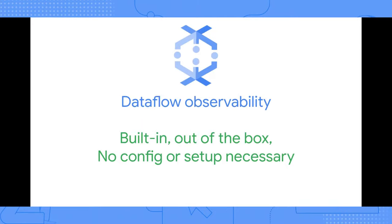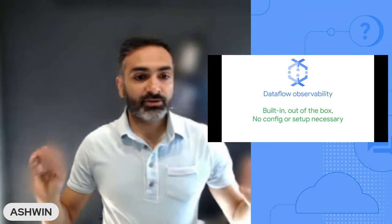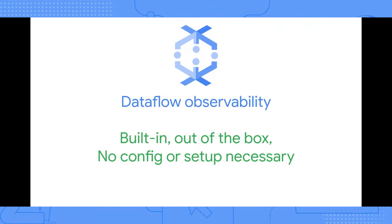Dataflow's observability is built in, out of the box — no configuration or setup is necessary. You focus on building and writing your pipelines. After you deploy the pipeline, all observability capabilities are right there in front of you. You do not have to deploy a monitoring stack, deploy agents, or set up dashboards. Most things are right there out of the box, and you can tweak and configure more as needed.